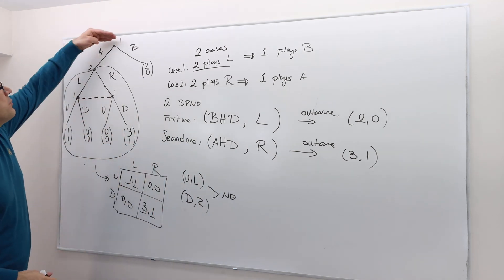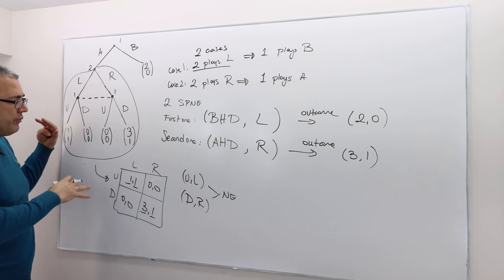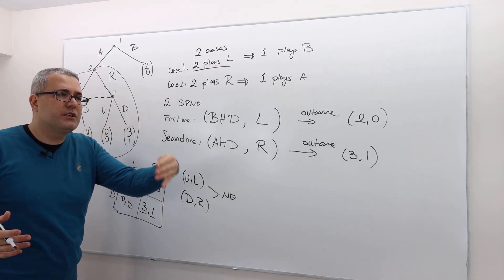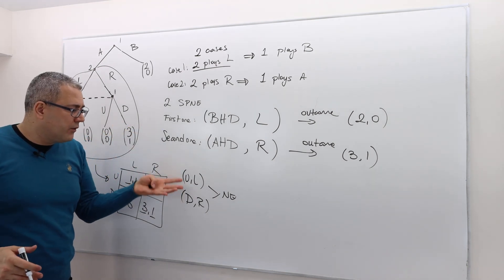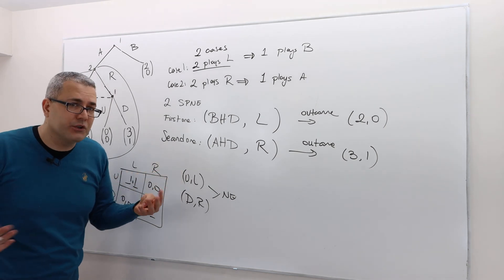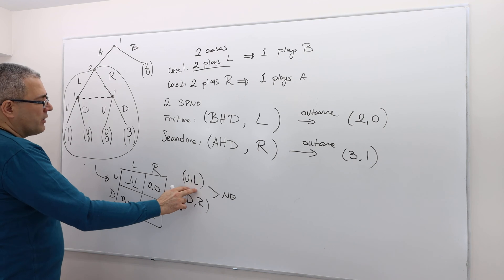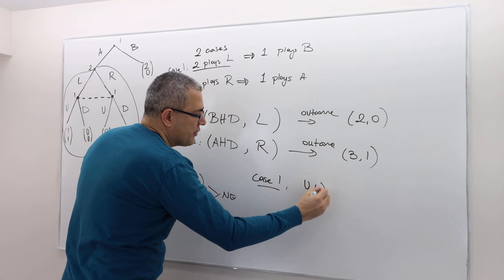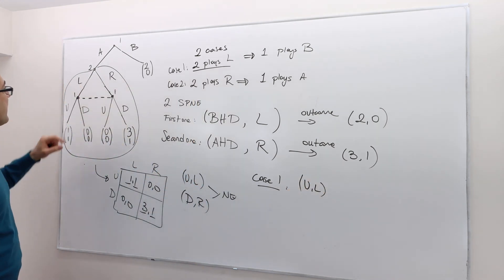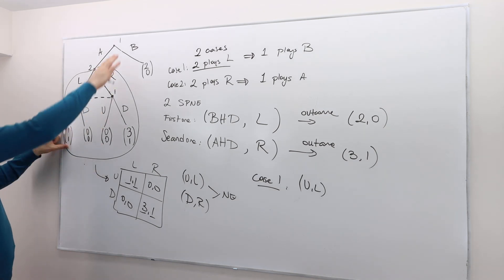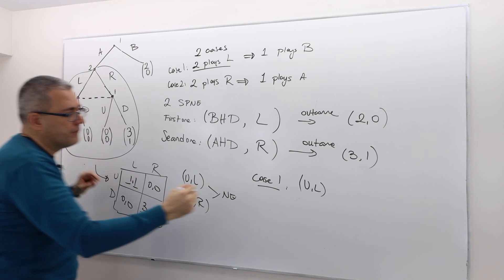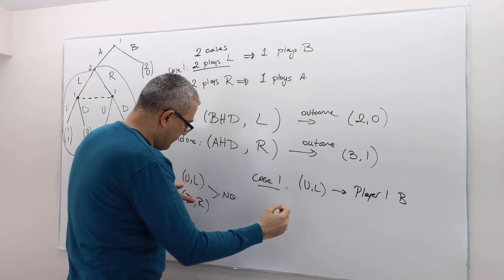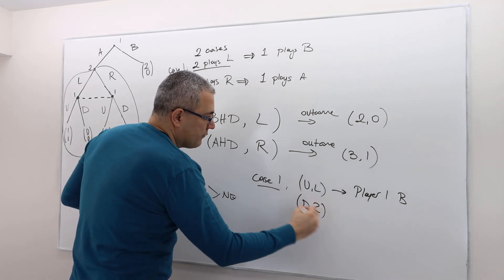Because there are two Nash equilibria, once player one plays a, they may end up in one of those Nash equilibria. Sub-game perfect Nash equilibrium says strategies form Nash equilibrium in every sub-game, so there are possibly two sub-game perfect Nash equilibria. Case one: u-l is the Nash equilibrium played here, giving payoff 1,1, so player one is going to choose b.